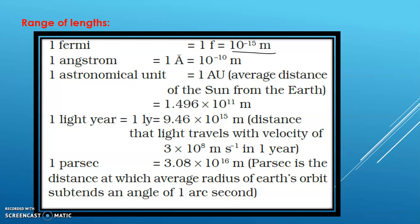We call the size of the proton — around 10 to the power of minus 15 meters — 1 Fermi. 1 Fermi is equal to 10 to the power of minus 15 meters. These conversions are important. Another unit is the Angstrom, which we use to express the wavelength of light. 1 Angstrom is equal to 10 to the power of minus 10 meters.